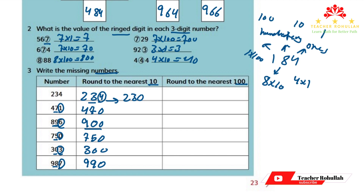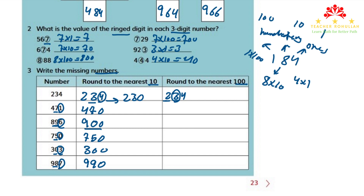Let's now move to the third column. In this column it says round to the nearest 100. To round to the nearest 100, we underline the digit in the hundreds place and circle the digit in the tens place. We compare the circled digit: if 5 or more we round up, if 4 or less we round down. For 234: 2 is underlined and 3 is circled. Seeing that 3 is 4 or less, so we round down to 200.